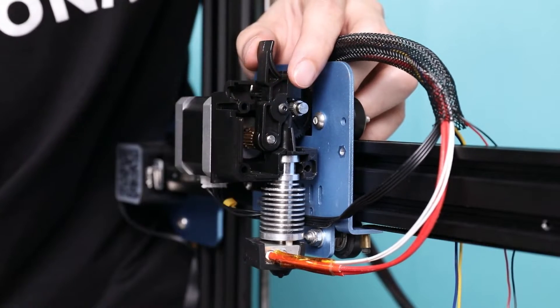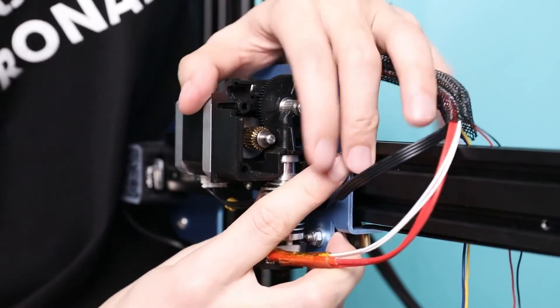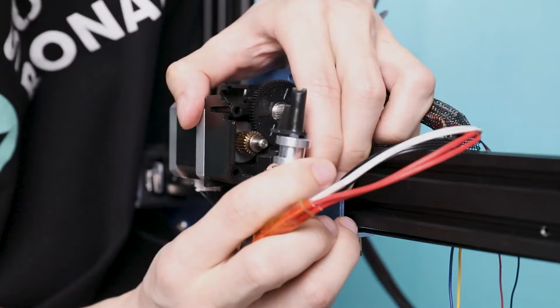Remove the spring loading assembly. Remove the filament load lever. Finally, remove the hot end with the filament guide.